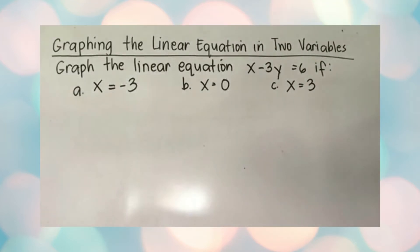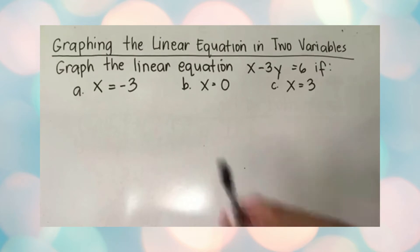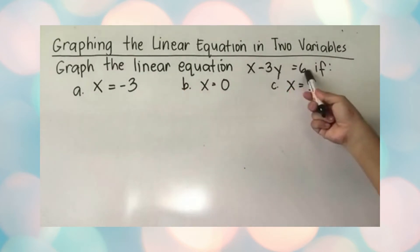This lesson is on graphing a linear equation in two variables. The graph of any linear equation in two variables is a straight line. Since it is a straight line, we only need to plot two points to determine the line; however, it is better to plot a third point to verify. We're going to graph the linear equation x minus 3y is equal to 6.